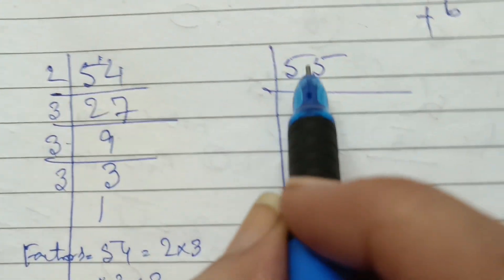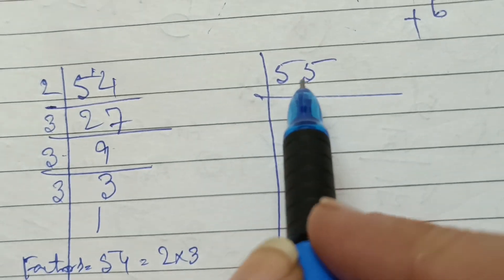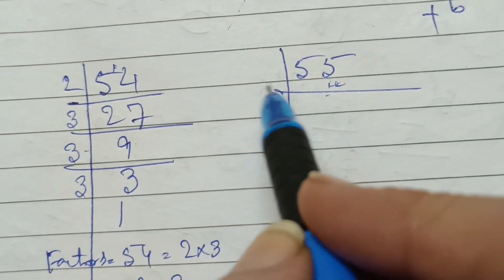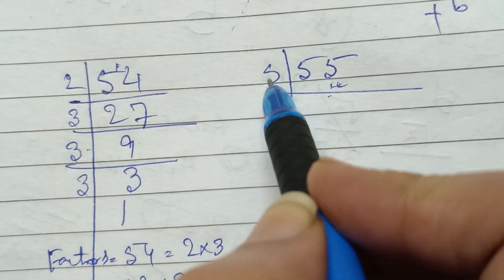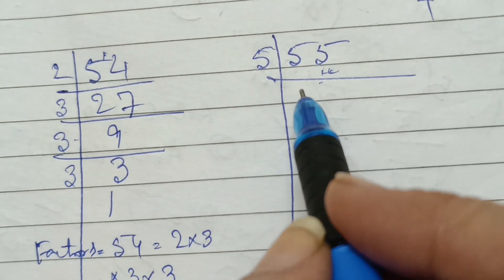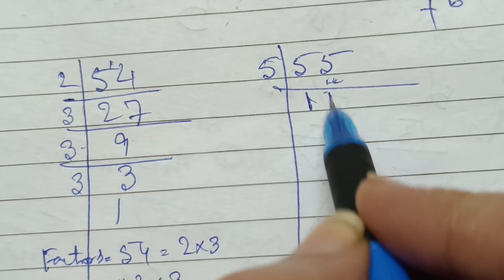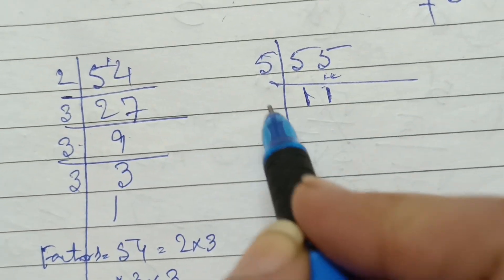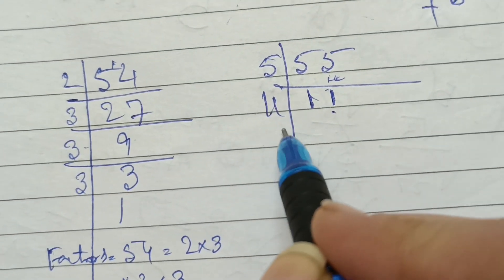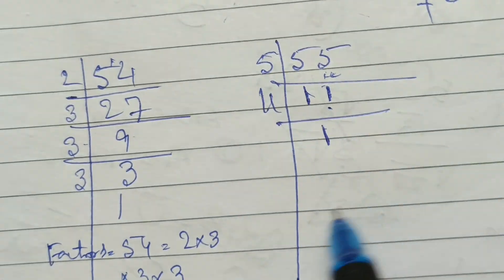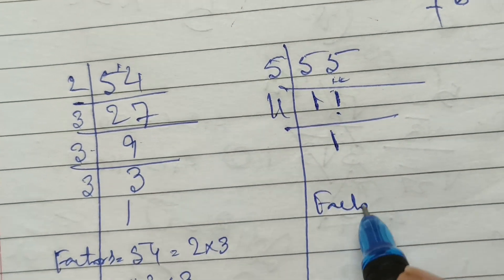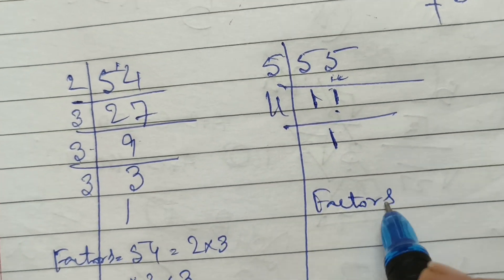And now, the factor of 55. 55 is divided by 5 or 11. So, 5 into 11, 55. The factors of 55 are 5 into 11.